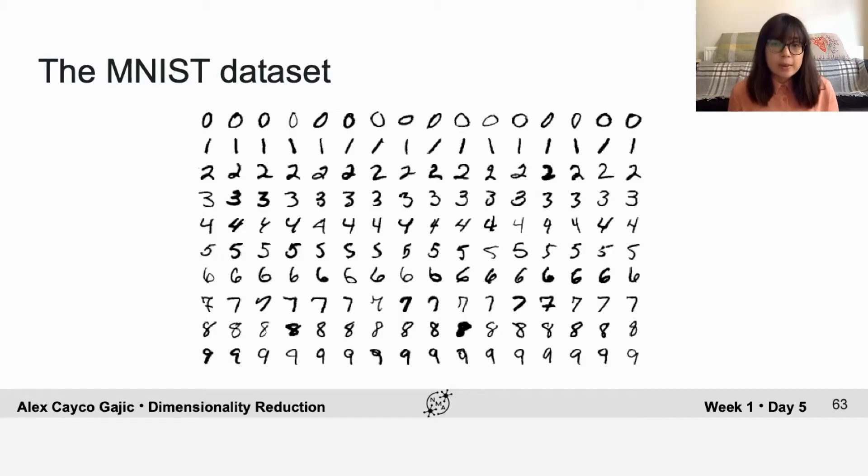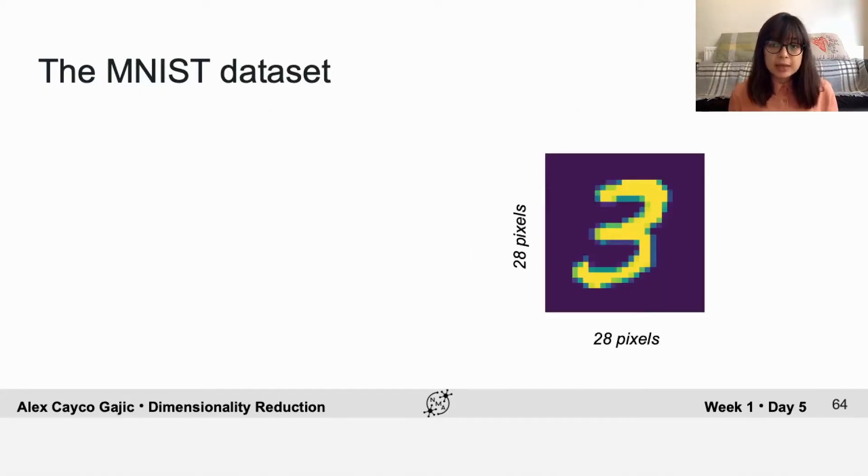MNIST is a very common dataset that is very widely used for benchmarking data algorithms, and it's made of 70,000 samples of different handwritten digits.